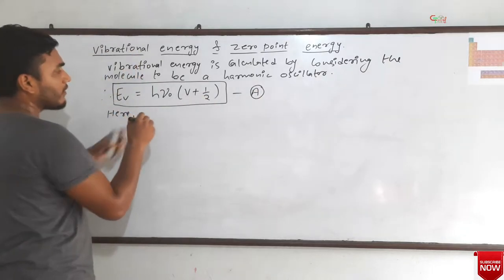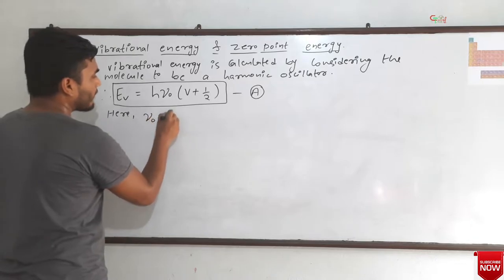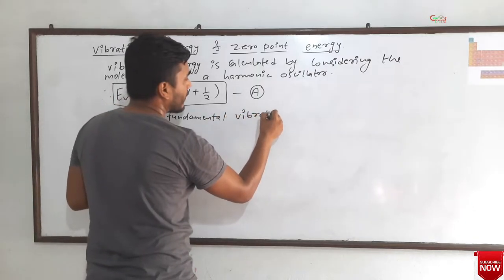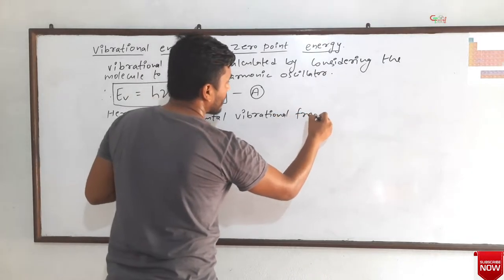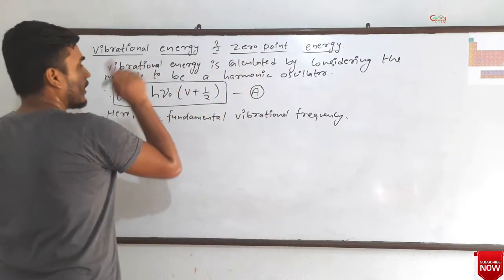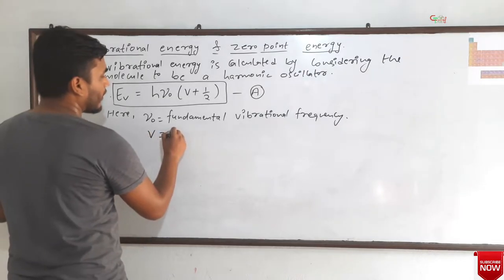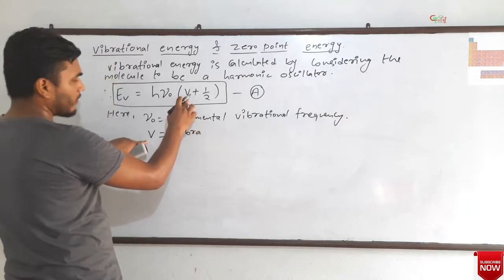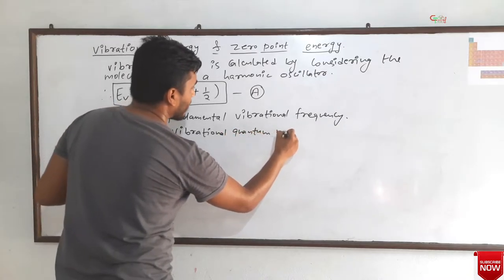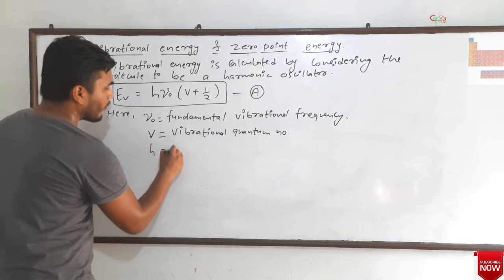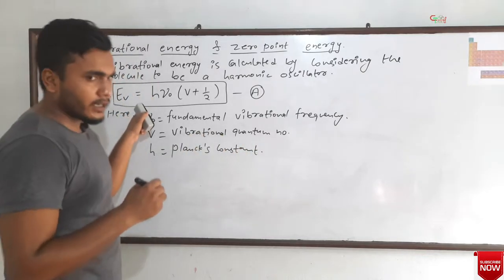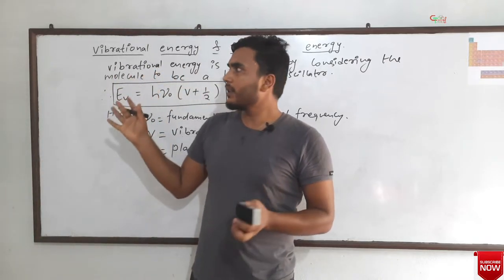Here, ν₀ is the fundamental vibrational frequency — the frequency at which the molecule vibrates. V is the vibrational quantum number, and h is Planck's constant. This is the formula by which we can calculate the energy of the vibrational level.